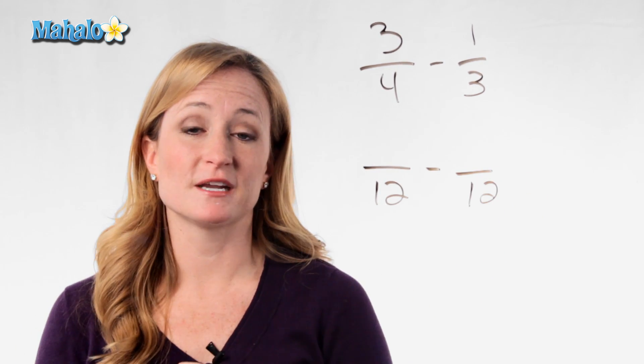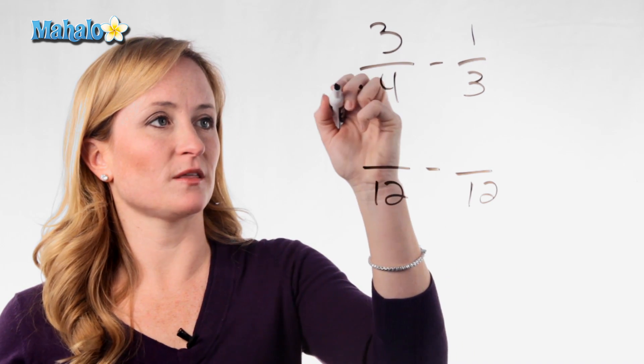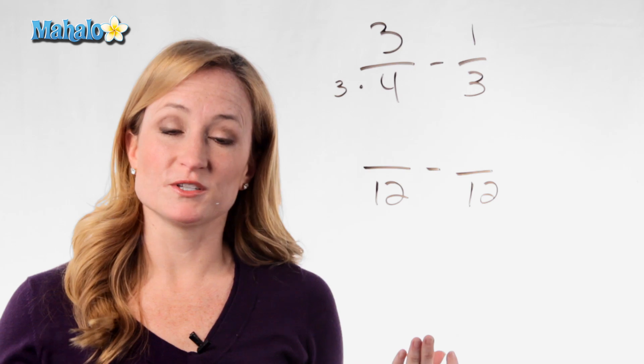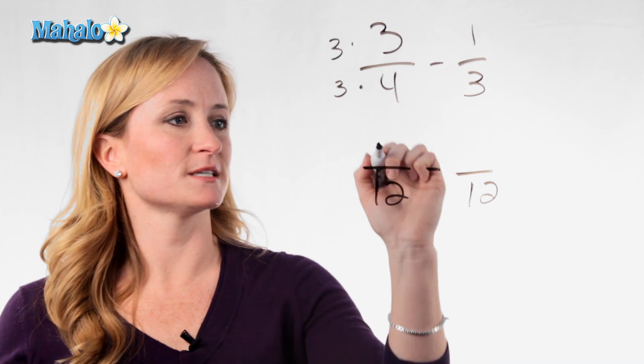So write down your denominator and again, figure out how you got there. How did this 4 become a 12? We multiply it by 3. So what do you do to the bottom, you must do to the top. So 3 times 3 is 9.